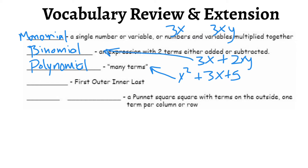Here we have two terms — hence 'bi.' 'Poly' meaning several. Now, to do these two types of multiplication, we're going to talk about how do you multiply two terms times three terms, or two terms times two terms. How do you multiply binomials with each other, or binomials with polynomials? To do that, we have two methods: we call this the FOIL method and we call it the box method.